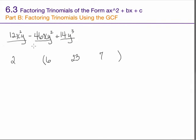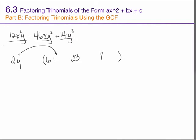Now what about the variables? I have two variables here. Looking at x first: I have two copies in the first term, only one in the second, and no copies of x in the third term. So while x is common to the first two terms, it's not present in the third, so it is not part of the greatest common factor. Now the y's: there's one copy in the first term, two in the second, and three in the third. I can only take out as many copies as are in every single term, which means I can only take one copy out. Multiplying by one doesn't change anything, so I don't write it down separately.